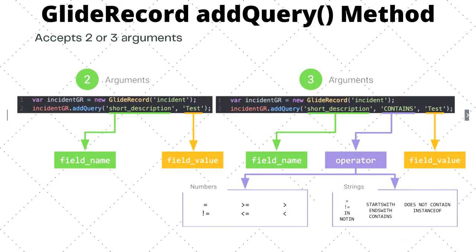Let's take a deeper look at the addQuery method. It accepts either two or three arguments, and there is a significant difference between them. With two arguments, you pass the field name as the first argument and the field value as the second — for example, field name is 'short_description' and value is 'test'. With three arguments, you pass the field name, then an operator such as 'CONTAINS', then the field value.